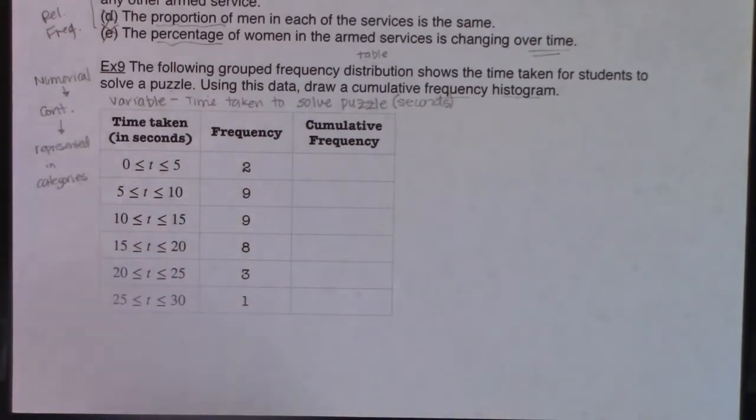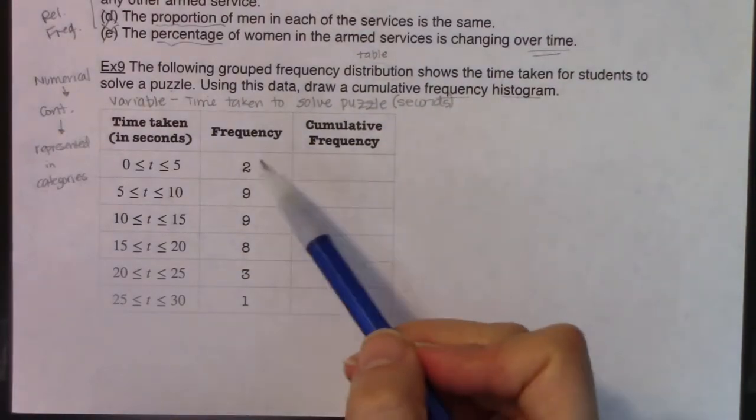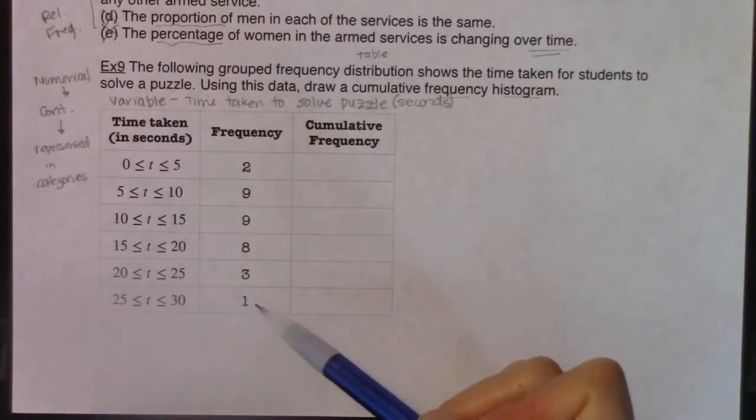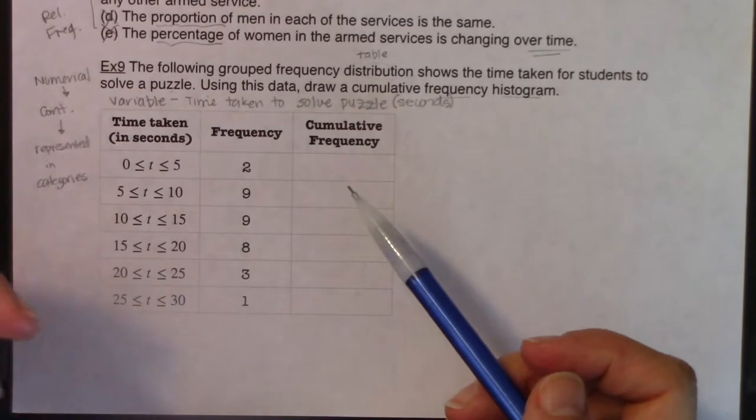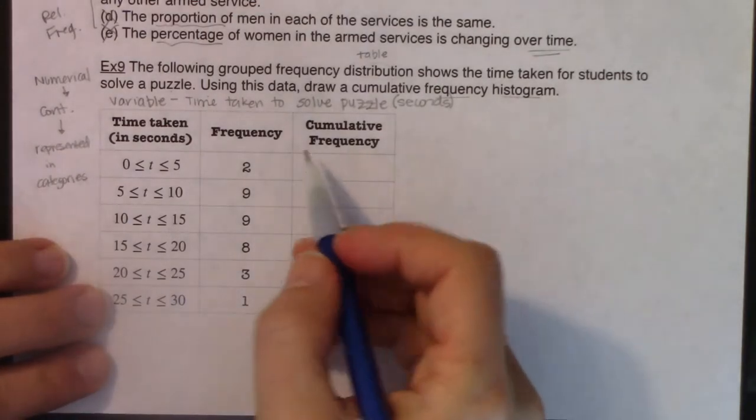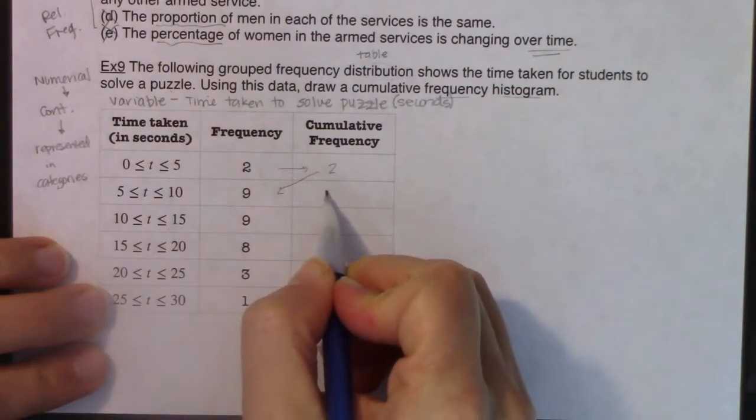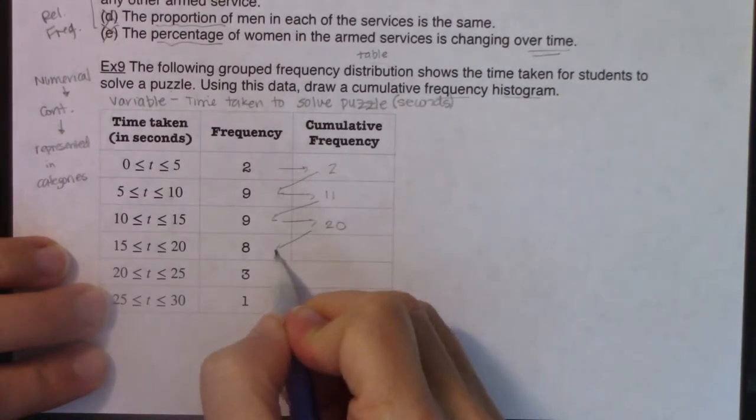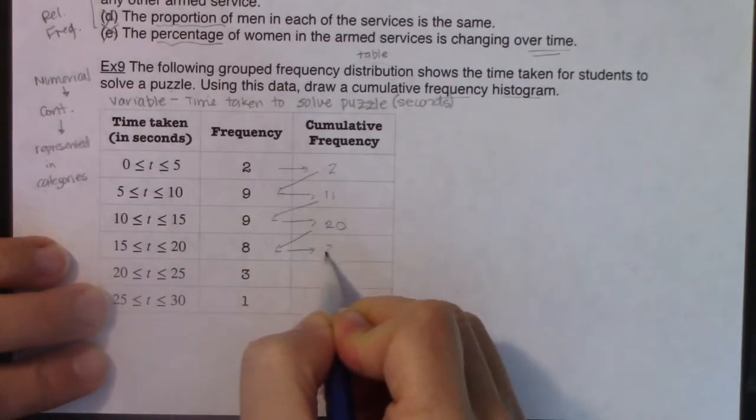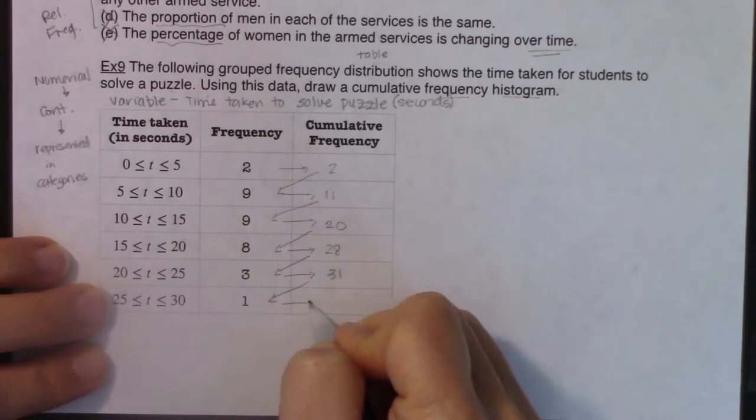The first thing I need to pay attention to is that they wanted a cumulative frequency histogram. So I have the frequencies, and I've got to build to the cumulatives. What I'm going to do is I'm going to zigzag. So I'm going to zig this way and zag. So 2 plus 9 is 11. 11 plus 9 is 20. 20 plus 8, 28. 28 plus 3, 31. And 31 plus 1, 32.